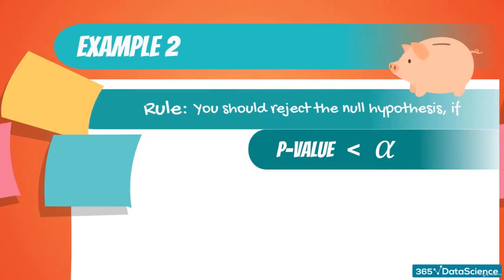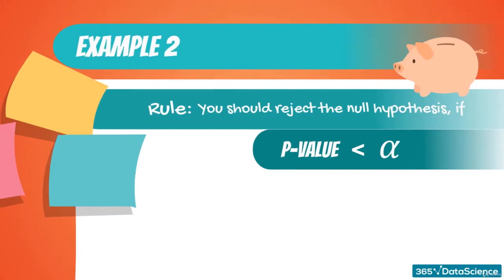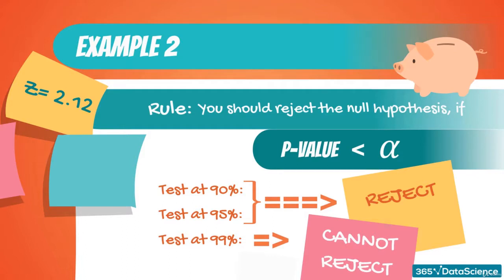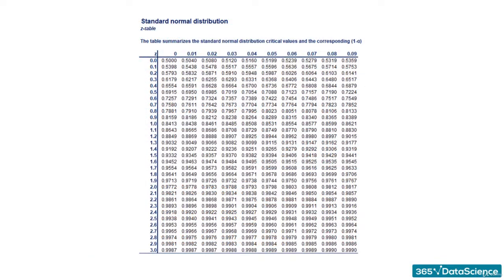Let's see another example. If our z-score was 2.12, we would reject the null hypothesis at 5%, but would not reject it at 1% significance. Now it becomes more interesting. At this point, we can actually look at the table and find the p-value. We look for the value that corresponds to 2.12 and find that it is 0.983.